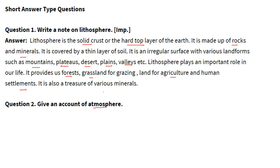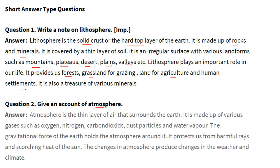Give an account of the atmosphere. The atmosphere is a thin layer of air that surrounds the earth. It is made up of various gases like oxygen, nitrogen and carbon dioxide, along with dust particles and water vapour. The gravitational force of the earth holds the atmosphere around us and it protects us from harmful rays and the scorching heat of the sun. Changes in the atmosphere produce changes in the weather and climate.